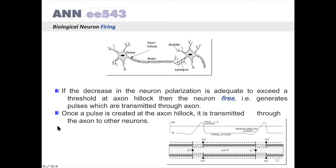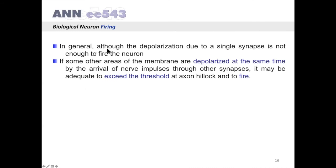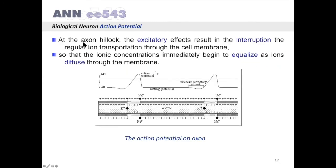In general, although the depolarization due to a single synapse is not enough to fire the neuron, if some other areas in the membrane are depolarized at the same time by the arrival of nerve impulses through other synapses, it may be adequate to exceed the threshold at axon hillock and to fire.